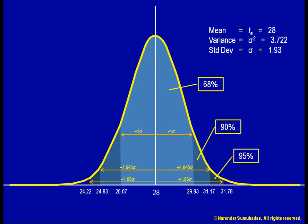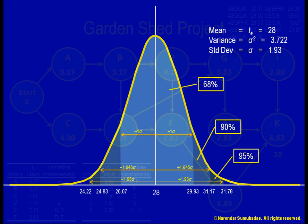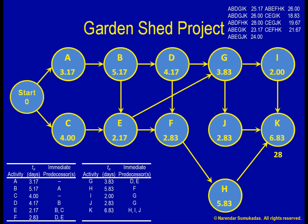There is another important point to note regarding the uncertainty in time estimates. As the project manager, I have a hundred things on my mind. To prioritize, I put the critical activities at the center of my radar screen. So I am going to watch activities A, B, D, F, H, K like a hawk to make sure they remain on track.